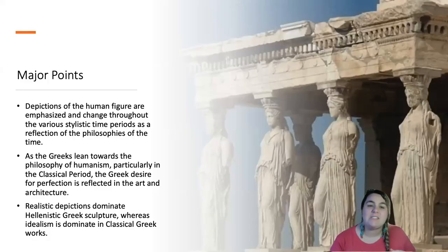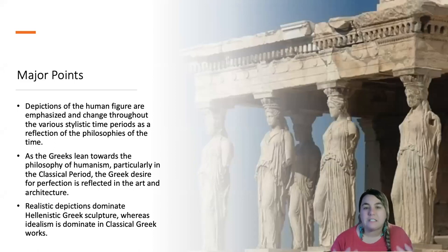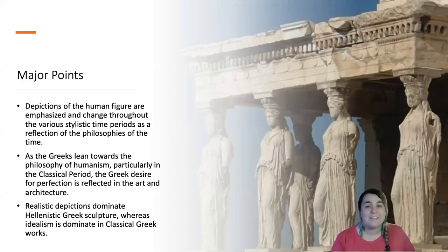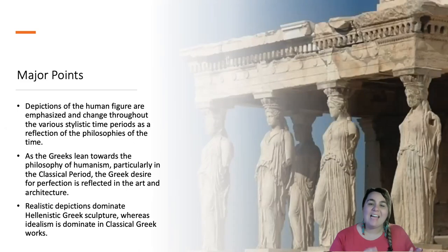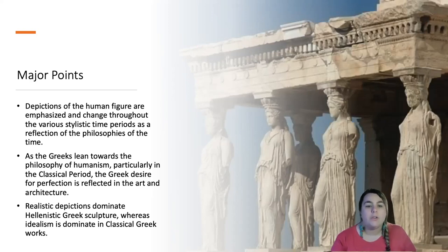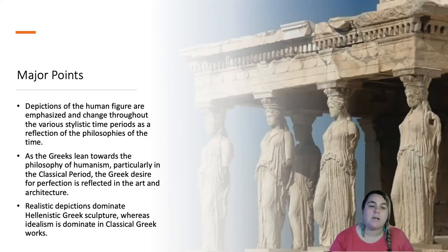Main points: depictions of human figures are emphasized and change throughout the various stylistic time periods as a reflection of the philosophies of the time. Unlike ancient Egyptian art, which is completely unchanged for 3,000 years, Greek art changes and evolves as Greeks lean towards the philosophy of humanism, particularly during the classical period. The Greek desire for perfection is reflected in the art and architecture. Realistic depictions dominate Hellenistic Greek sculpture, whereas idealism dominates in the classical Greek works.